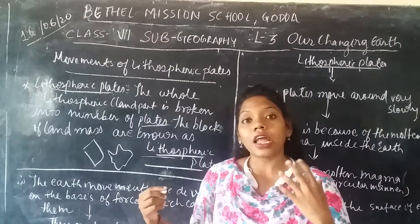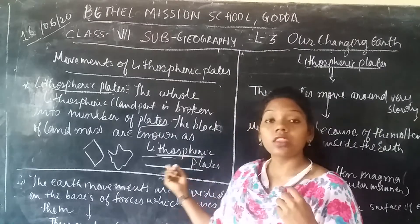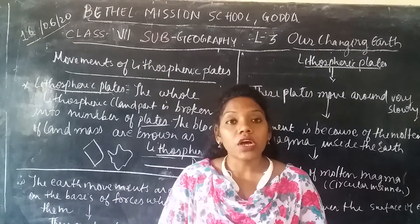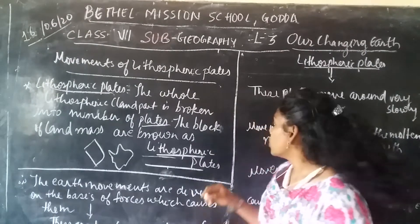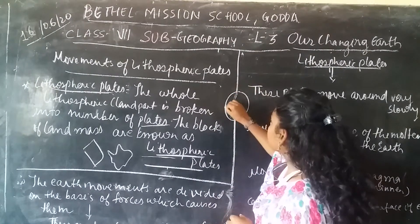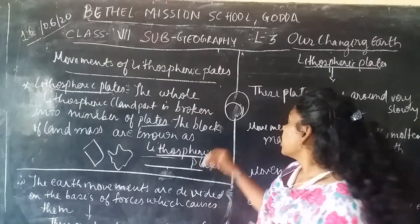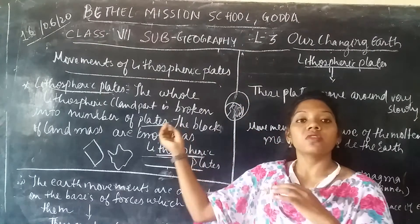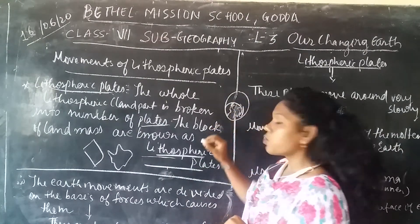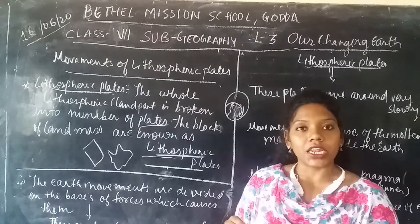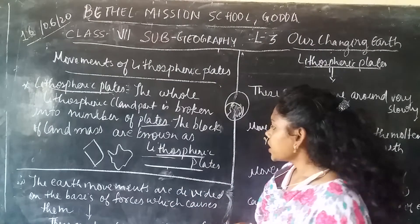As I discussed in the last video, this land mass — thousands of years ago — was one single land mass, which was called Pangaea. After some time, it was broken down into smaller pieces and moved apart from each other. These broken parts are called the lithospheric plates or slabs.